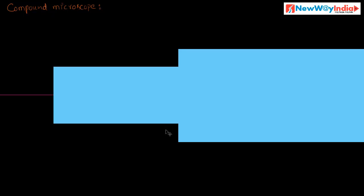Let us discuss about the Compound Microscope. What is a Compound Microscope and where is it used? A Compound Microscope is used for viewing minute particles like viruses and bacteria. So, what is the structure of this component?